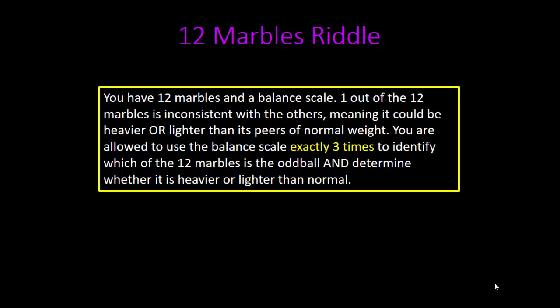One out of the 12 marbles is inconsistent with the others, meaning it could be heavier or lighter than its peers of normal weight. You are allowed to use the balance scale exactly three times to identify which of the 12 marbles is the oddball and determine whether it is heavier or lighter than normal.